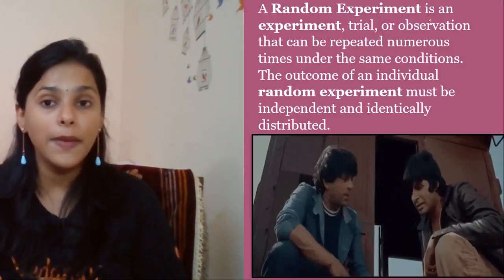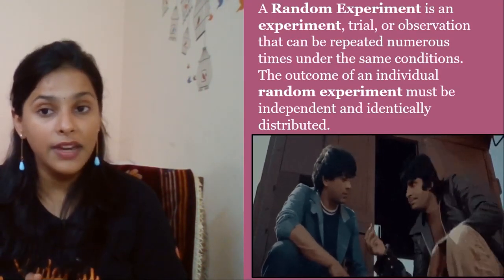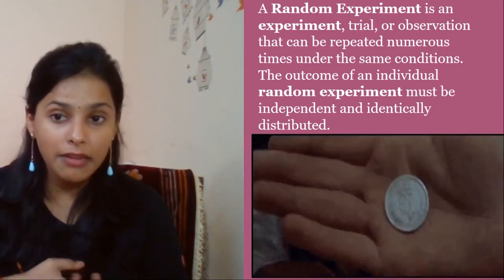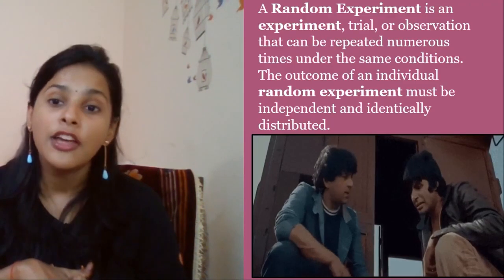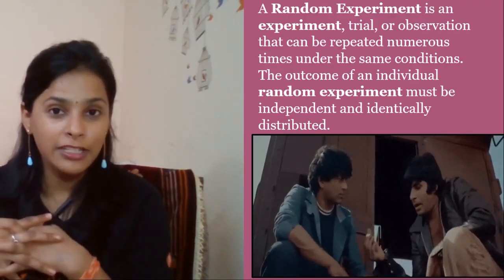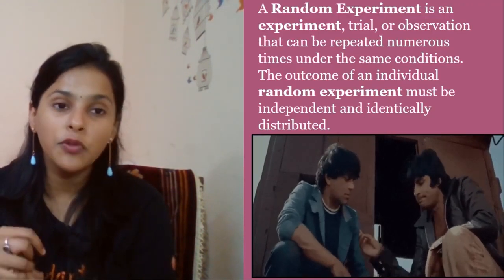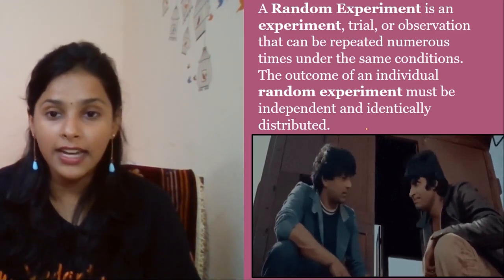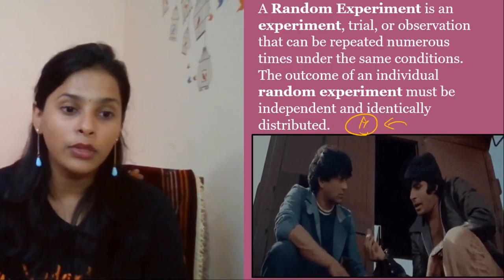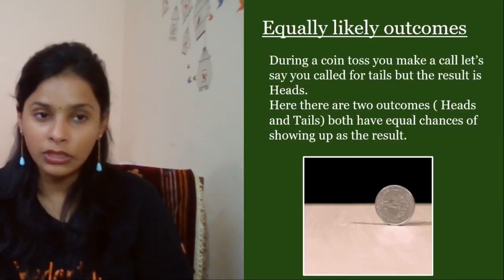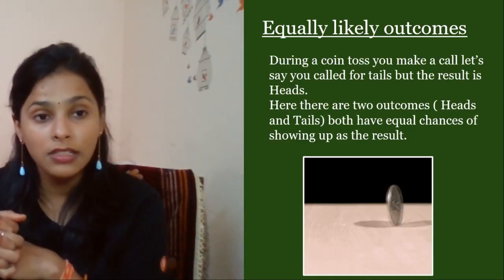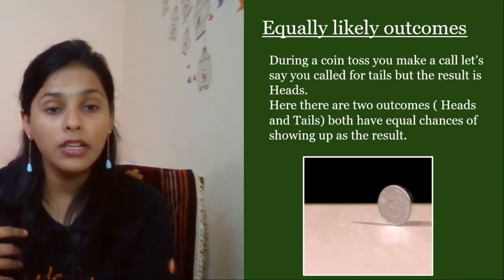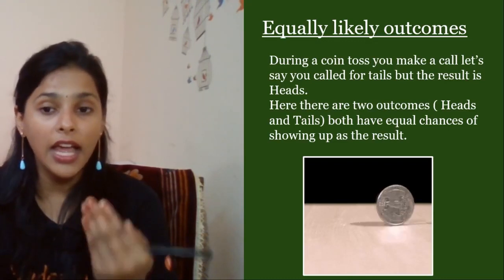Random experiment is an experiment, trial, or observation that can be repeated numerous times under same conditions. The outcome of an individual random experiment must be independent and identically distributed. Now on your screen, this is from the very famous movie Sholay where they have tossed a coin. If they get heads, then they are going to go fight with the goons. Equally likely outcomes means both outcomes have equal chances to be the result. Hence we can say that the results can be head or tail, and both outcomes are equally likely to happen.